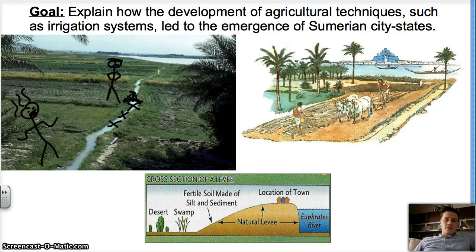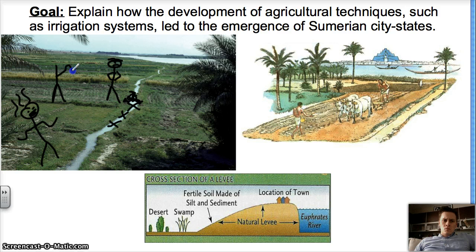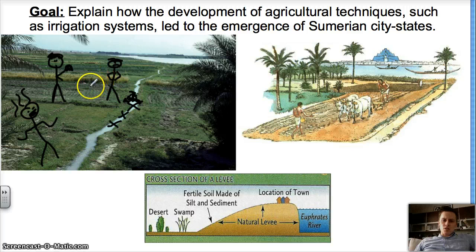So how does this lead to the emergence of city-states? City-states were created to govern these canals and trenches. If a person failed to keep theirs clean, there would be a government official coming to talk to them, assigning a consequence — maybe sending this person to jail. They were in charge of governing to make sure this irrigation system worked.